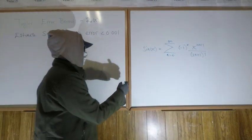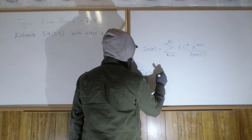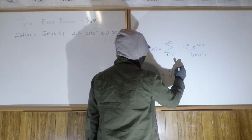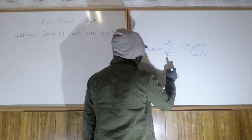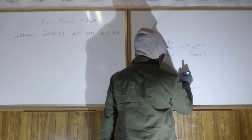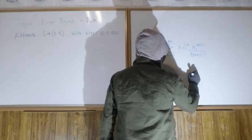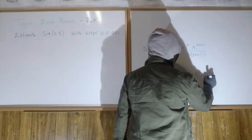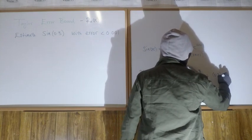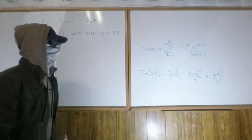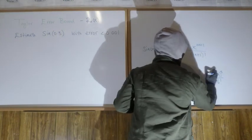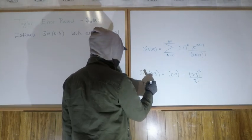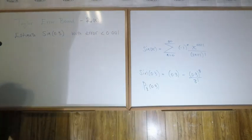If we do sine of 0.3 and write out terms: plugging in n equals 0 gives x to the first over 1 factorial, so just 0.3. When n equals 1, negative 1 to the first gives minus, and we get 0.3 to the third over 3 factorial. One more term gives plus 0.3 to the fifth over 5 factorial. These are the first three non-zero terms. If we stopped here, this is the third-degree Maclaurin polynomial for sine of x evaluated at 0.3.